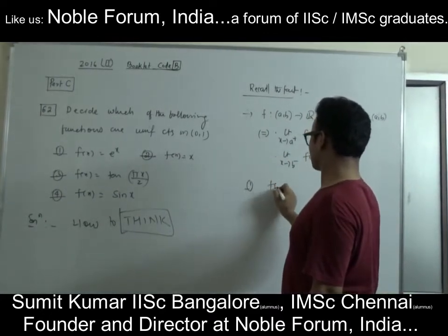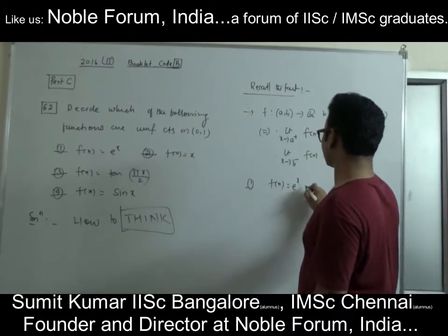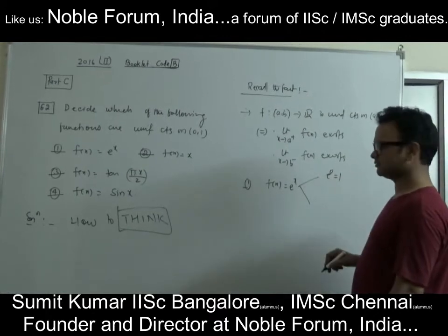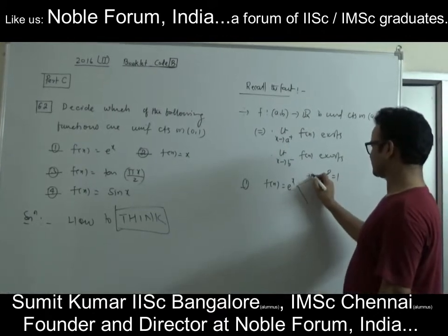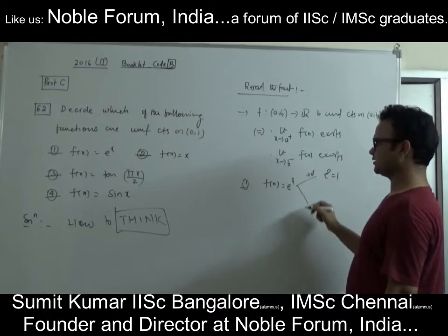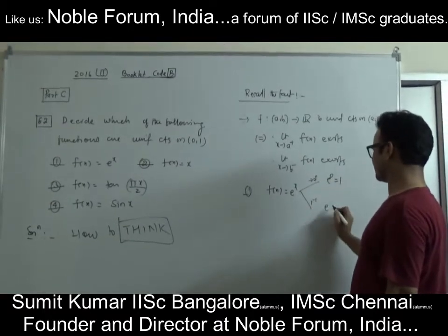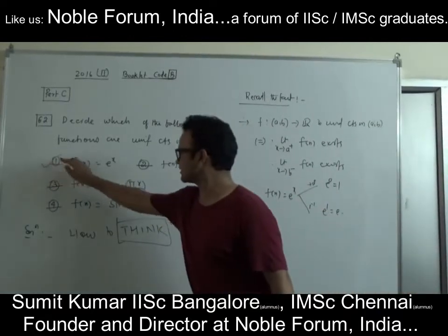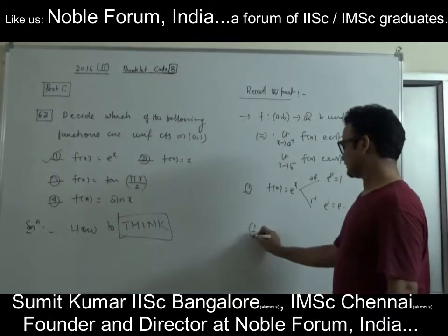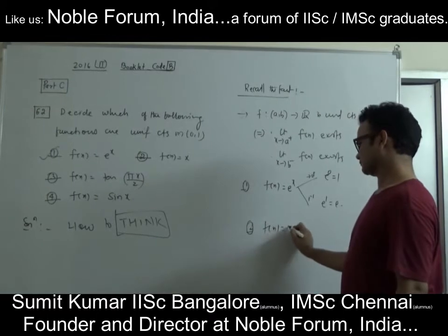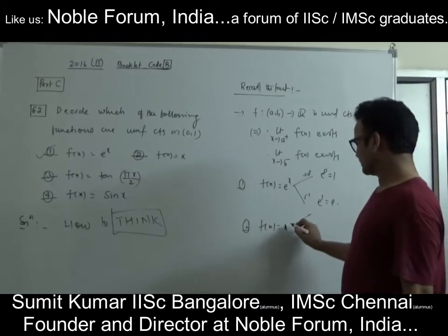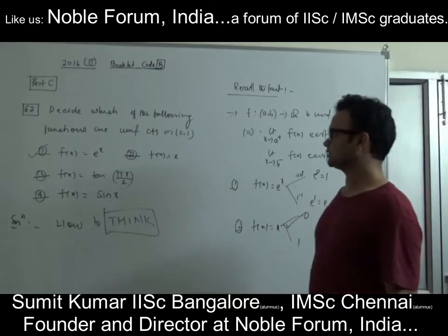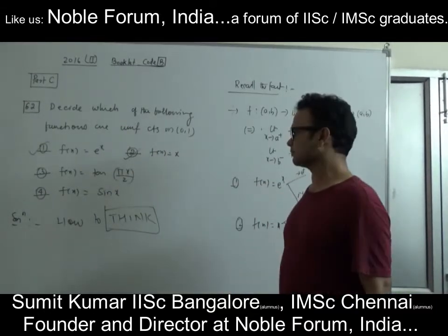So the theorem is: f is uniformly continuous on (a,b) if and only if the limits at both endpoints exist and are finite. First option: f(x) = e^x. As x→0+, the limit is e^0 = 1, and as x→1−, the limit is e^1. Both limits are finite, so this is uniformly continuous. Second option: f(x) = x. The left limit is 0 and the right limit is 1 — both finite — so this is also uniformly continuous.